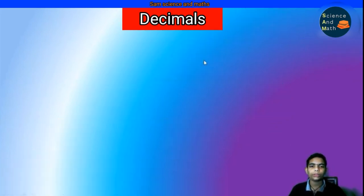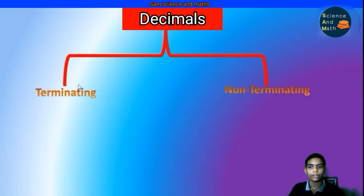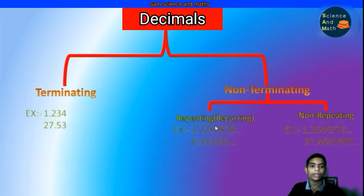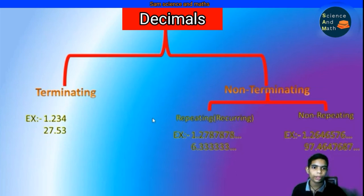Now first let us see about decimals. Decimals are another form of fractions, and there is a decimal point in them. In decimals we have two parts: terminating and non-terminating decimals. In non-terminating decimals we again have two parts: repeating and non-repeating decimals. Repeating is also called recurring decimals. Terminating means to stop, and non-terminating means to continue — it is continuous.